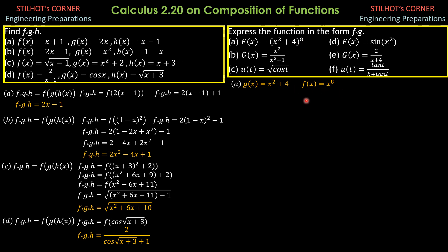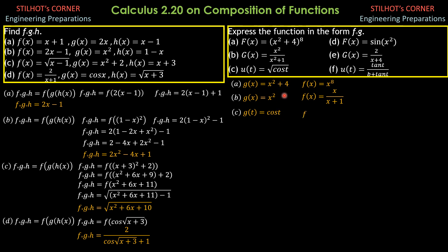For part b, we anticipate that g of x is equal to x squared, and f of x is equal to x over (x plus 1). For part c, g of t should be cosine of t, and f of t is square root of cosine of t.